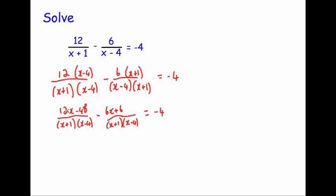Whenever we're subtracting fractions with a common denominator, we just subtract the numerators. So we do 12x subtract 6x, which gives 6x. Be careful here: we've got minus 48 subtract 6. It's just minus 48 subtract 6, which gives minus 54. So we have 6x minus 54 over x plus 1, x minus 4, and that equals negative 4.